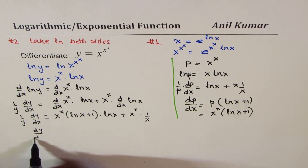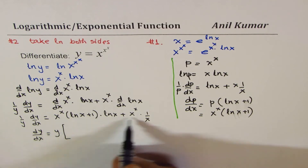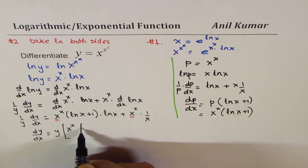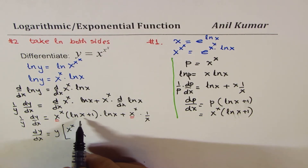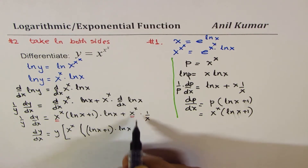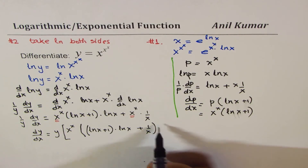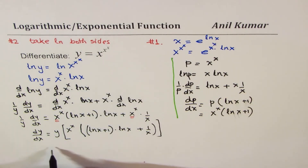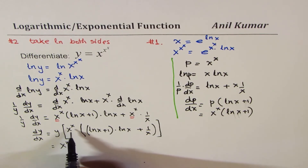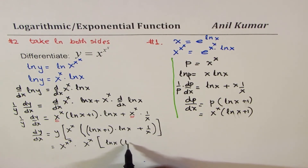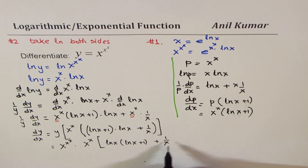From here we can write what dy/dx is. dy/dx equals y times all of this. We can factor out x to the power of x, leaving within the bracket: ln x times (ln x + 1) plus 1 over x. Since y equals x to the power of x to the power of x, the final derivative is x to the power of x to the power of x, times x to the power of x, times [ln x times (ln x + 1) plus 1 over x].